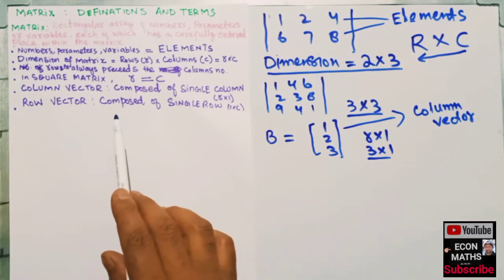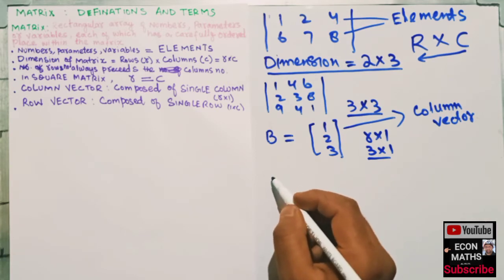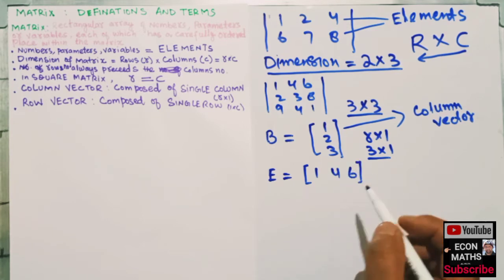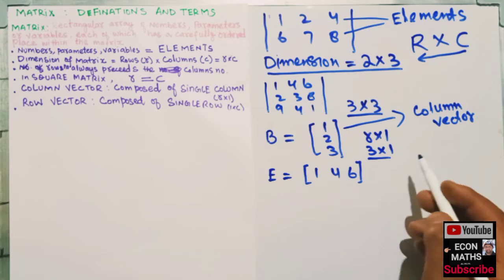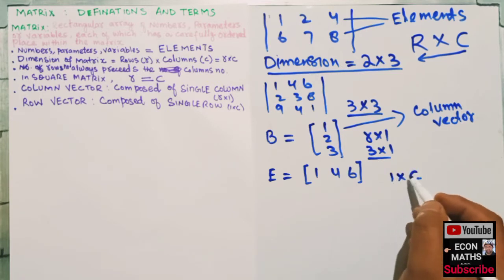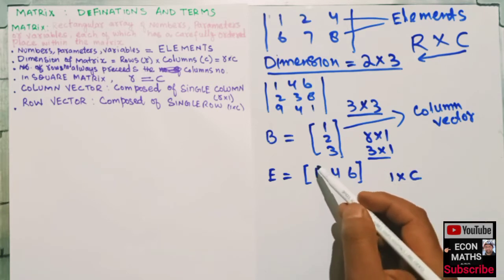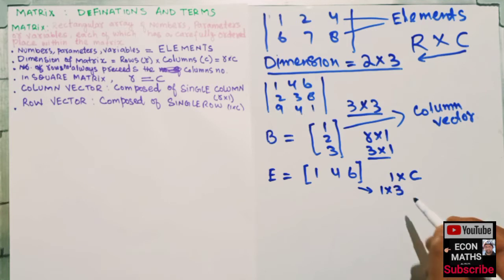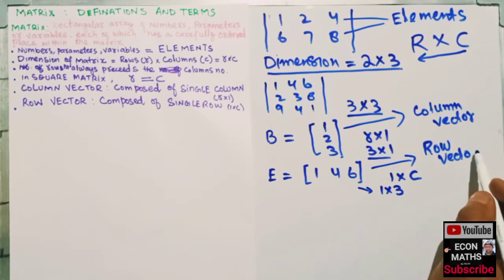A row vector is composed of a single row. For example, if matrix E has the elements one, four, six arranged in a single row, the number of rows is only one. The dimension of a row vector is one by C — one row and C columns. Here the number of columns is three, so the dimension of this matrix is one by three. This is the row vector.